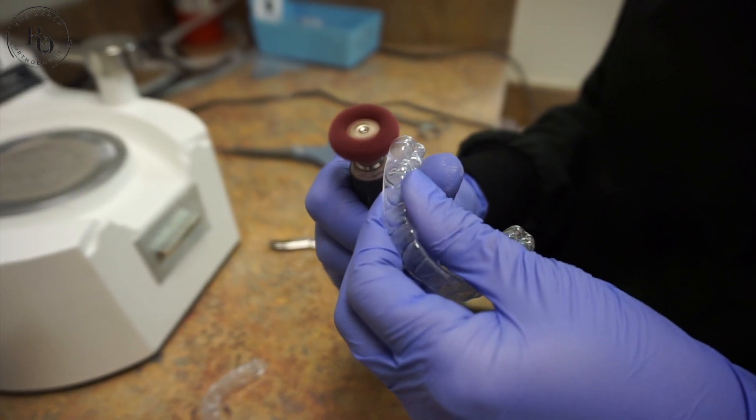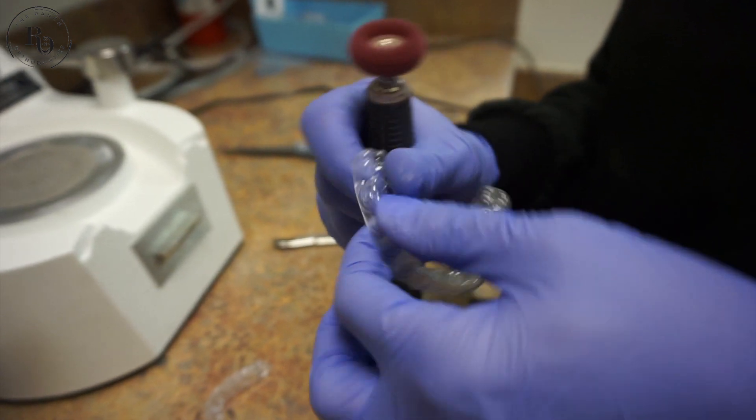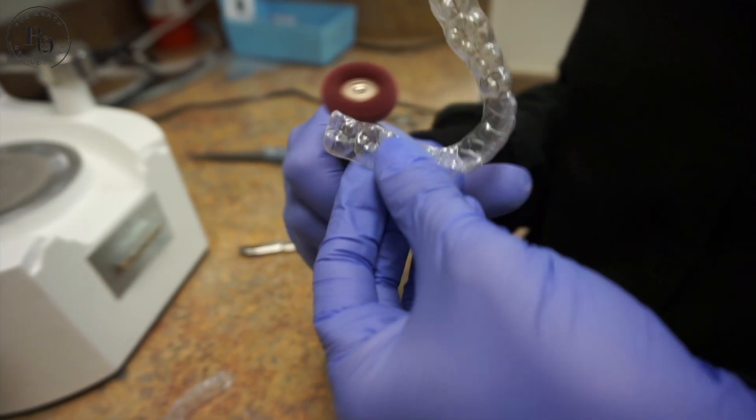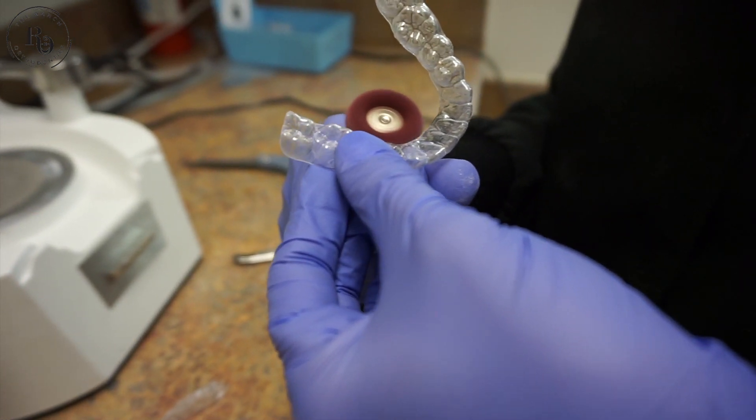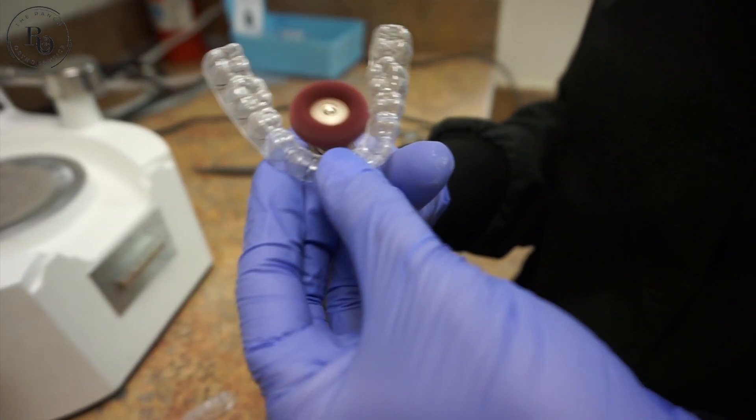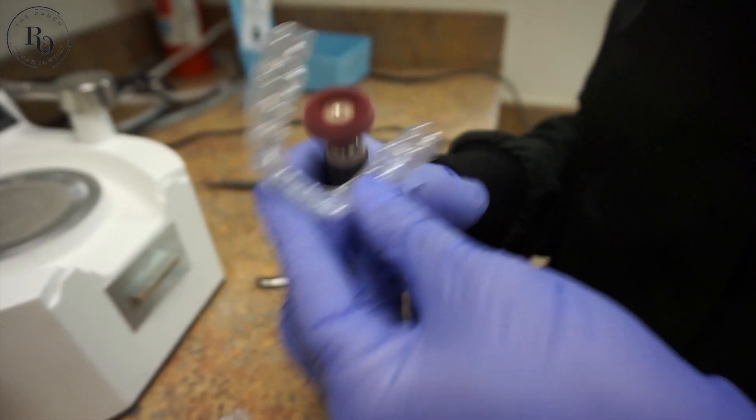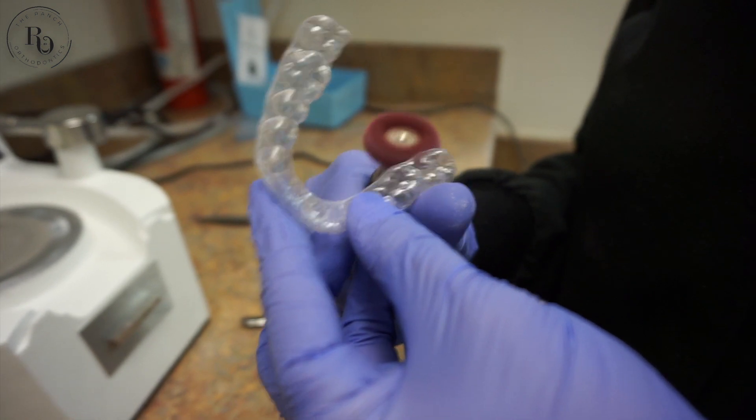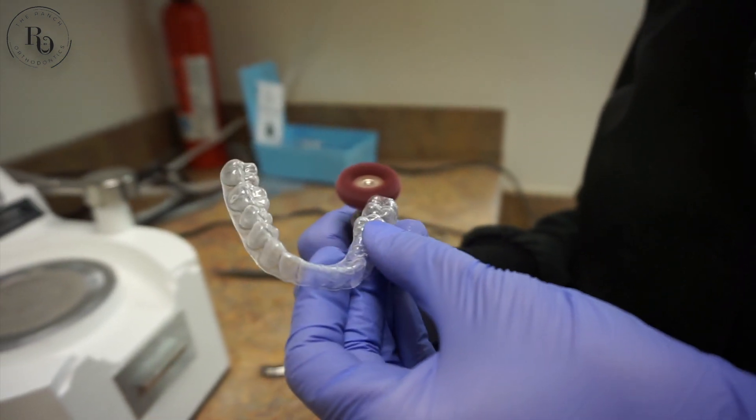We use this little polishing wheel here to go around every edge of your aligner. Make sure that nothing is going to be bothering your lips, cheeks, or gums. We go around the entire aligner until it's perfectly smooth and ready to go.